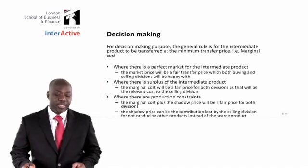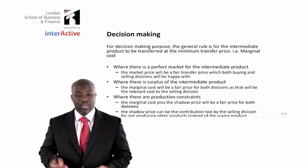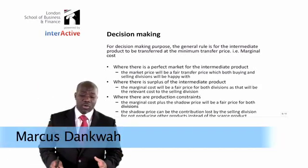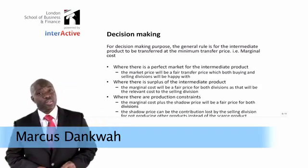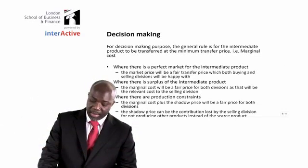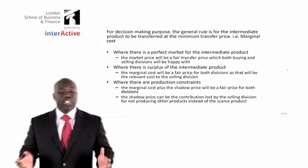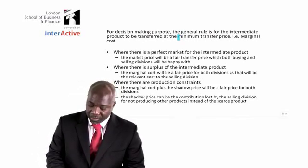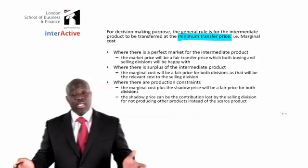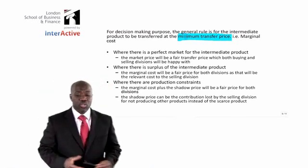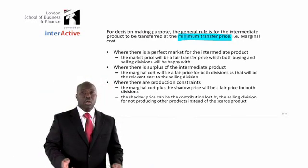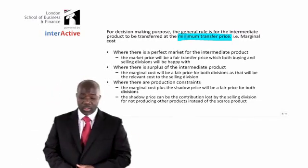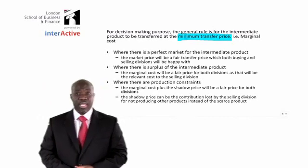When we're dealing with transfer price, we need to look at it on two faces: whether it's for decision-making purposes or for performance evaluation purposes. If it's for decision-making purposes, the general rule is that the intermediate product should be transferred at the minimum transfer price, which is always the marginal cost. Let's pick up the three scenarios and see how we can apply this to decision-making purposes.